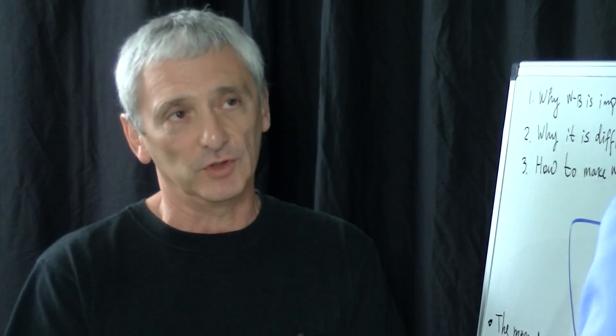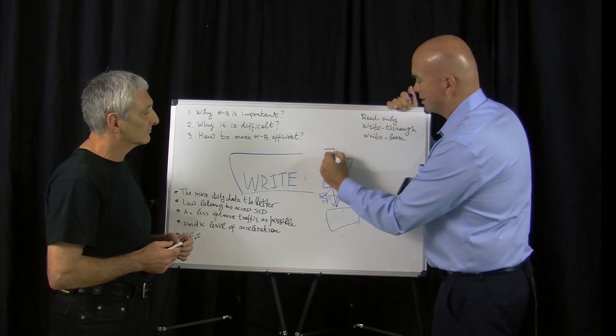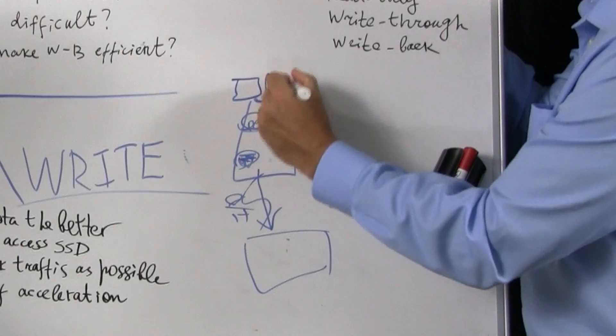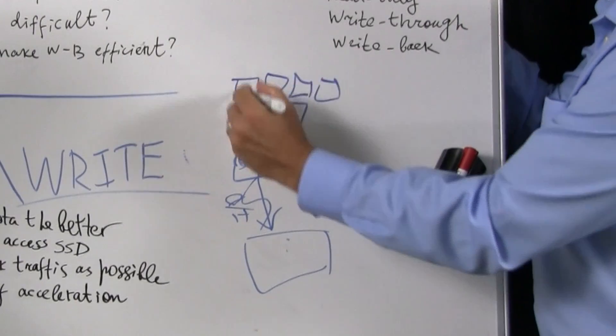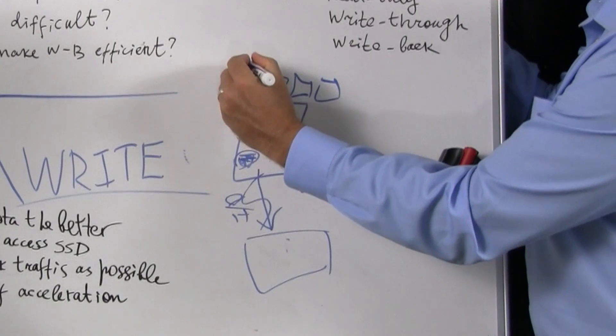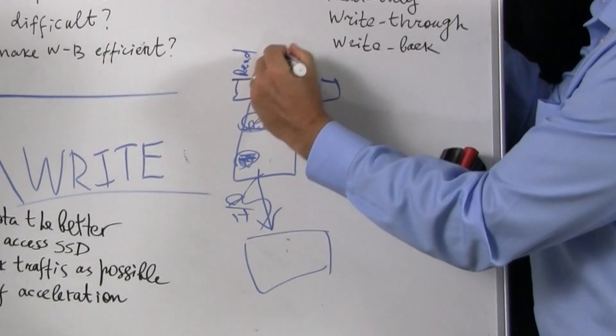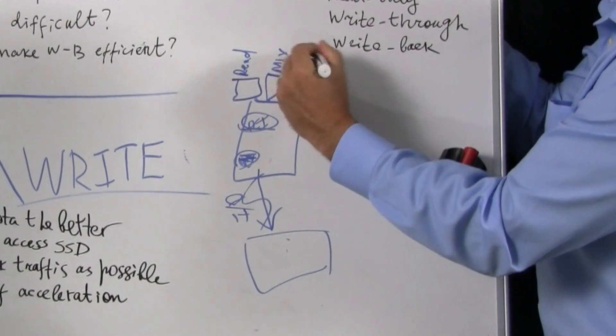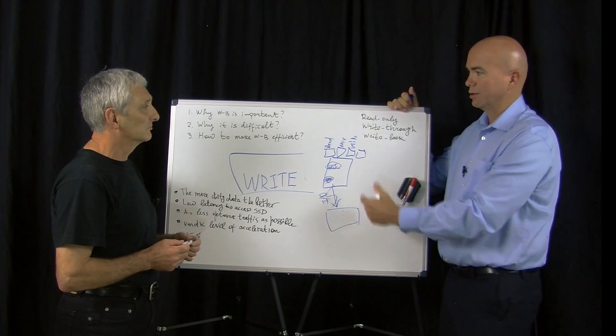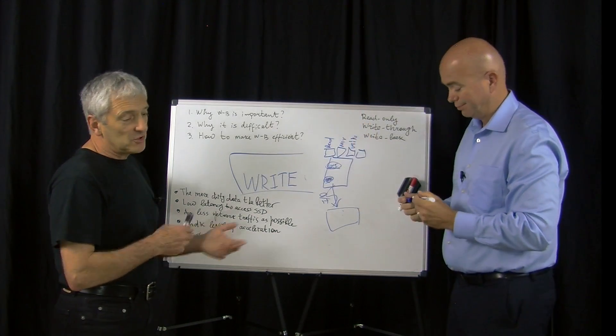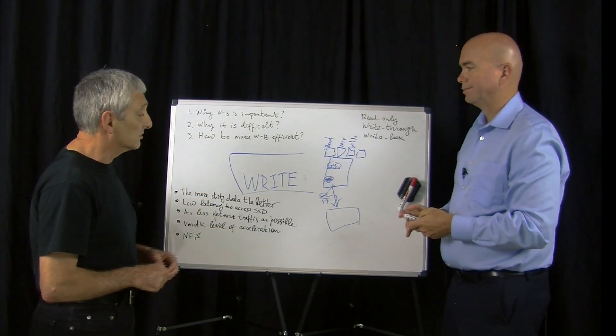My assumption would be that's because if there's a physical server we have multiple virtual machines running here, and one could be very read heavy, one could be a nice mix, and then one could be very write heavy. We really have no way of predicting until exactly the system starts running, and then machines migrate, so it's very hard to predict what's going on.